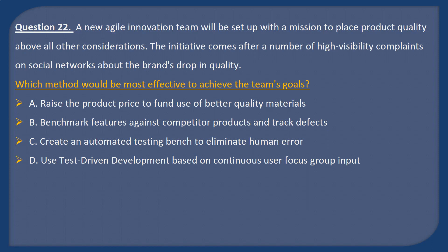Question 22. A new Agile innovation team will be set up with a mission to place product quality above all other considerations. The initiative comes after a number of high-visibility complaints on social networks about the brand's drop in quality. Which method would be most effective to achieve the team's goals? A: Raise the product price to fund use of better quality materials. B: Benchmark features against competitor products and check defects. C: Create an automated testing band to eliminate human error. D: Use test-driven development based on continuous user-focused group input.